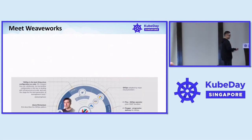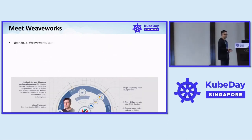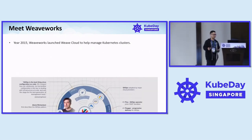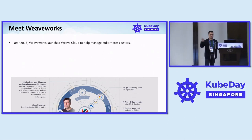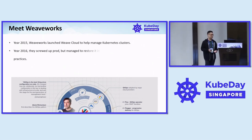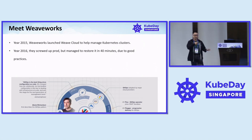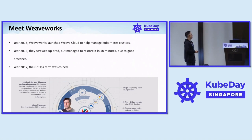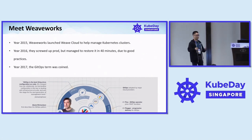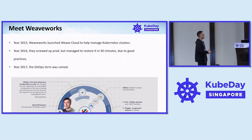Meet this company called WeaveWorks. In 2015, they launched a product called WeaveCloud to help manage clusters. Then in 2016, they intentionally broke prod but managed to restore it in 40 minutes due to these good practices. And then in 2017, they coined the term GitOps.